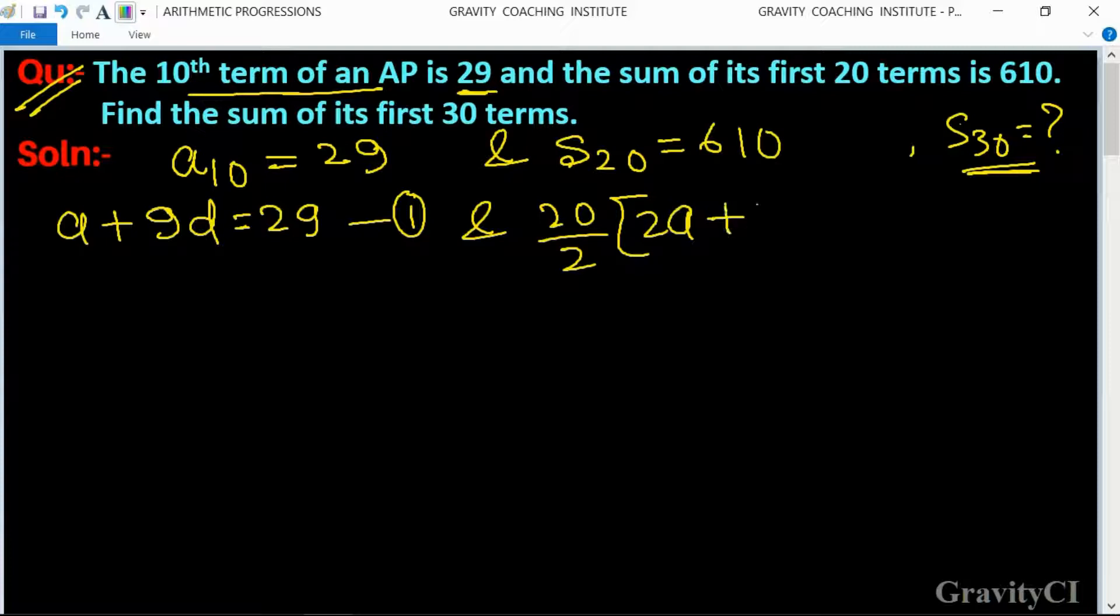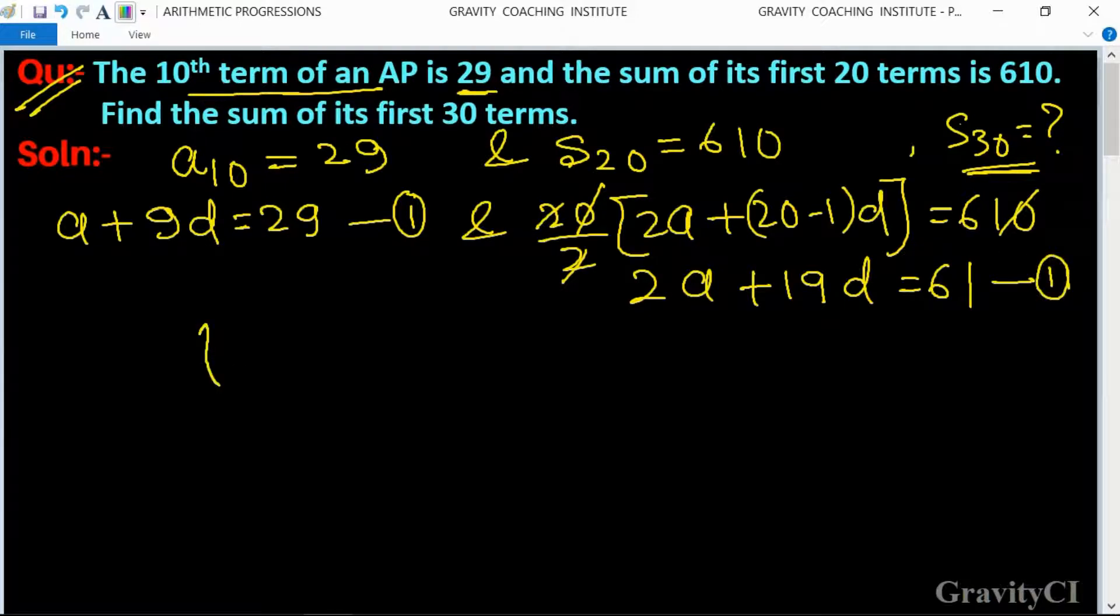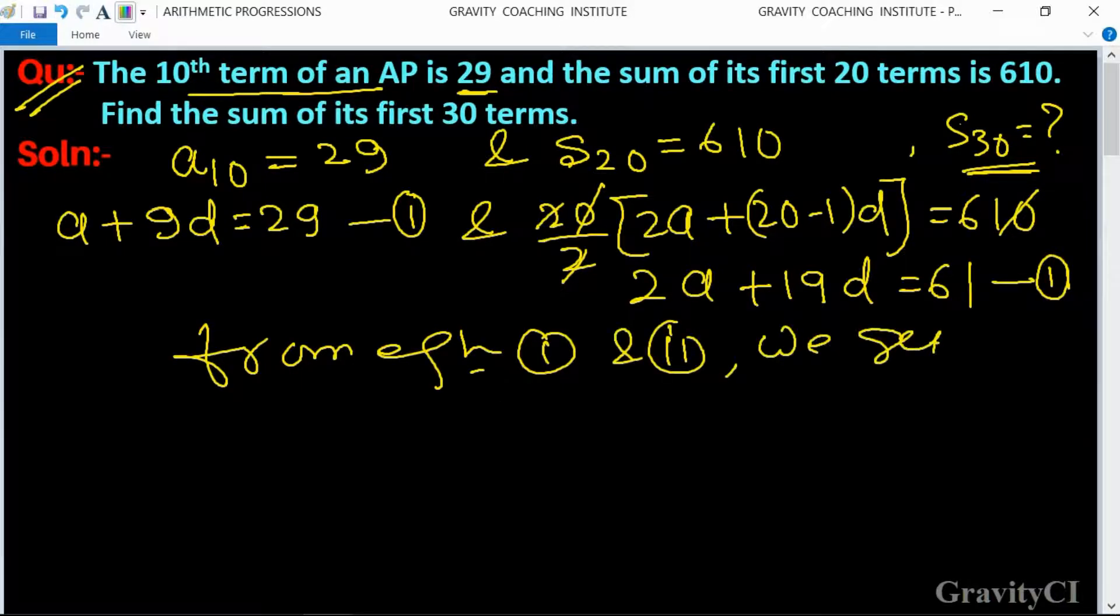2A plus 20 minus 1 D equals 610. Canceling 2, we get 2A plus 19D equals 61. This is equation second. So from equations first and second we get A plus 9D equals 29 or 2A plus 19D equals 61.